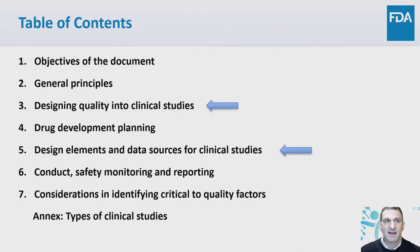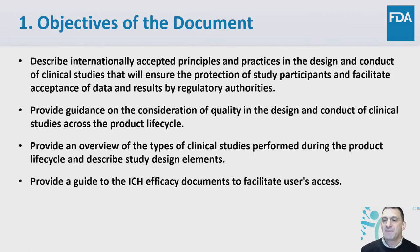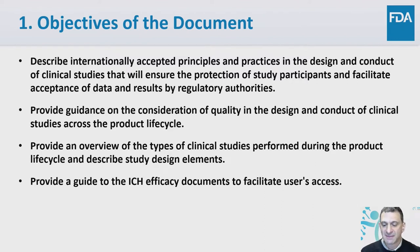Here's a table of contents from the renovated E8. I'm going to focus on Section 3 and Section 5, which is where most of the new material is in E8 R1 compared to the original E8. I'll have a little bit to say about Section 4, Drug Development Planning. In the interest of time, I'm going to move quickly through some slides, including this slide on the objectives of the document. You can read the document, which is available on the ICH website, to get the details.